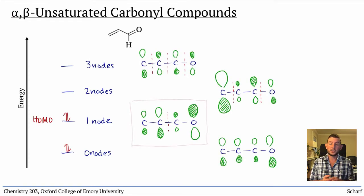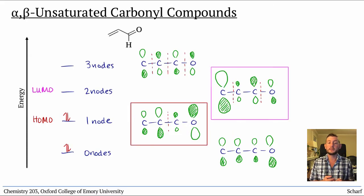The HOMO is largest on O and the alpha carbon, and the LUMO is largest at the beta carbon, with a substantial lobe at the carbonyl carbon.